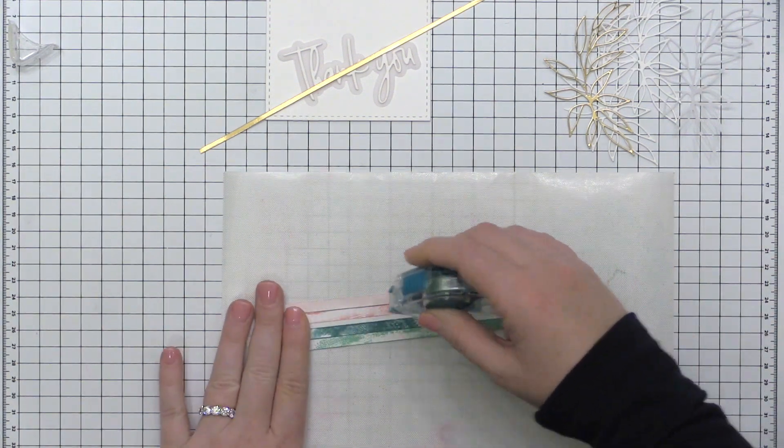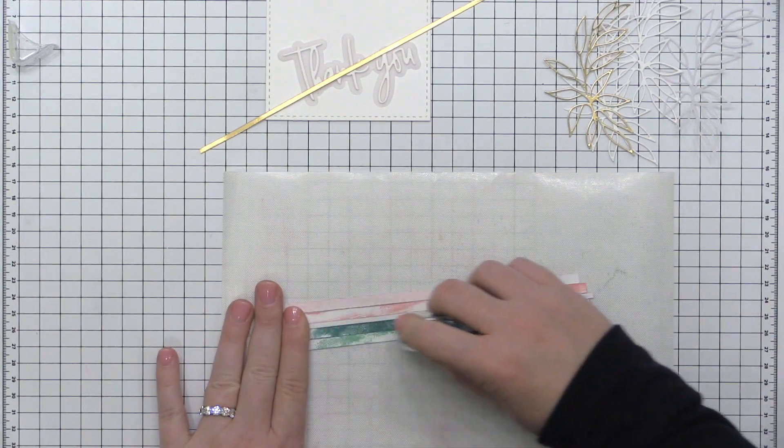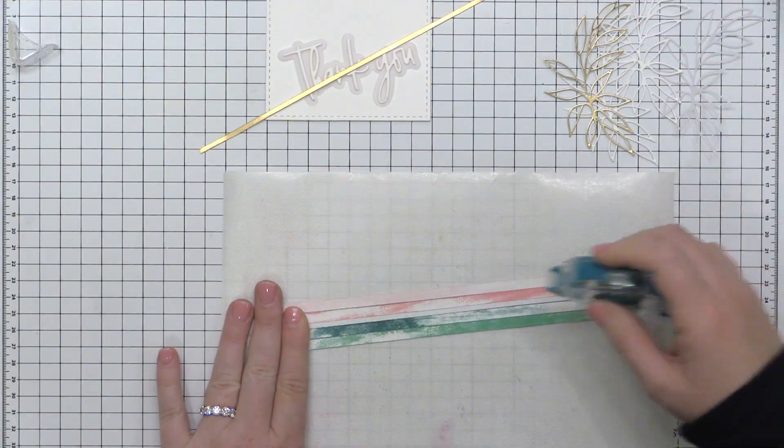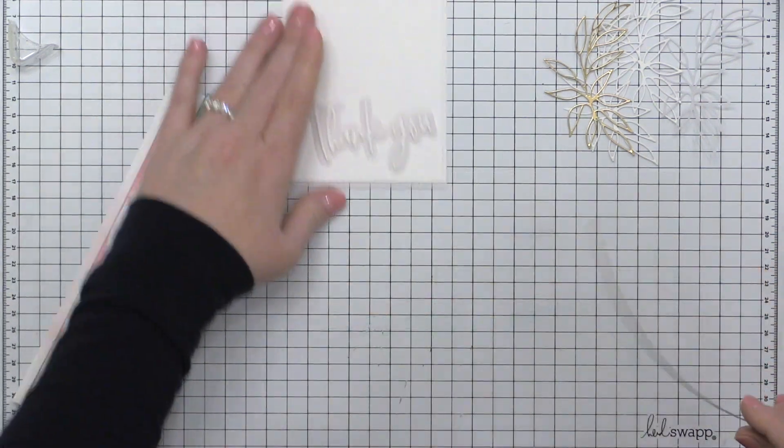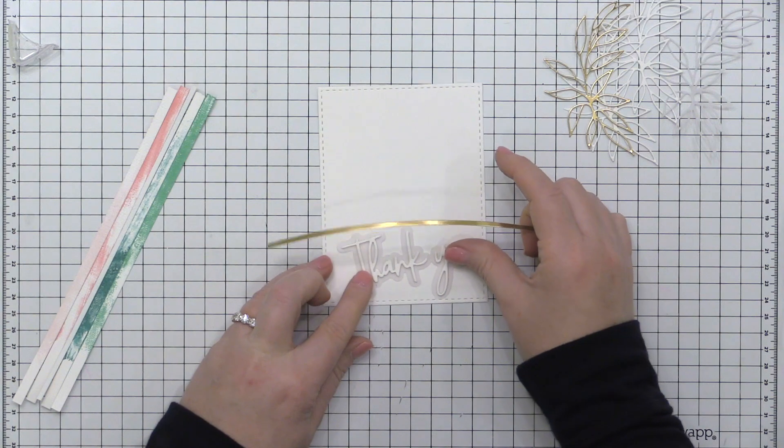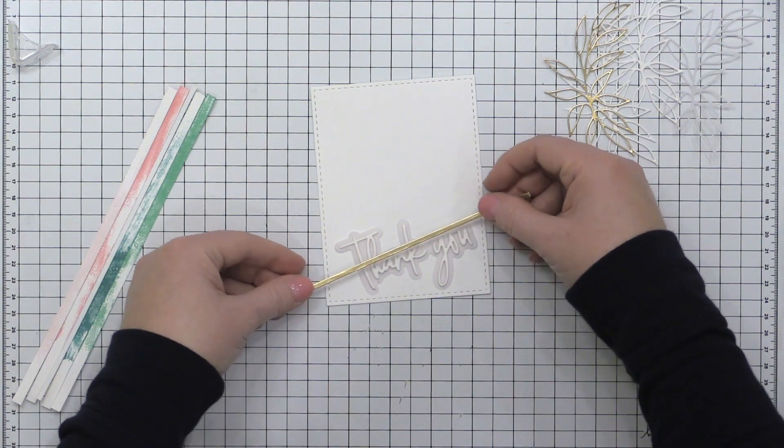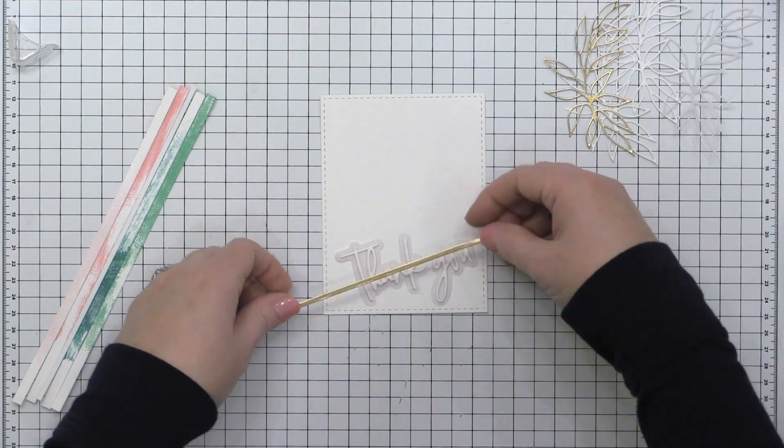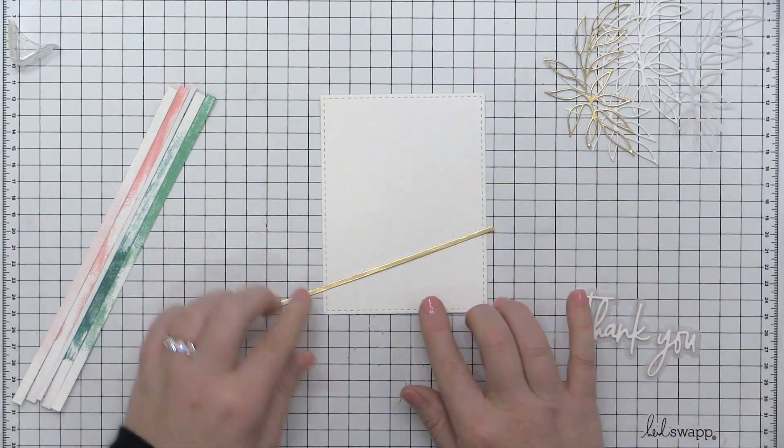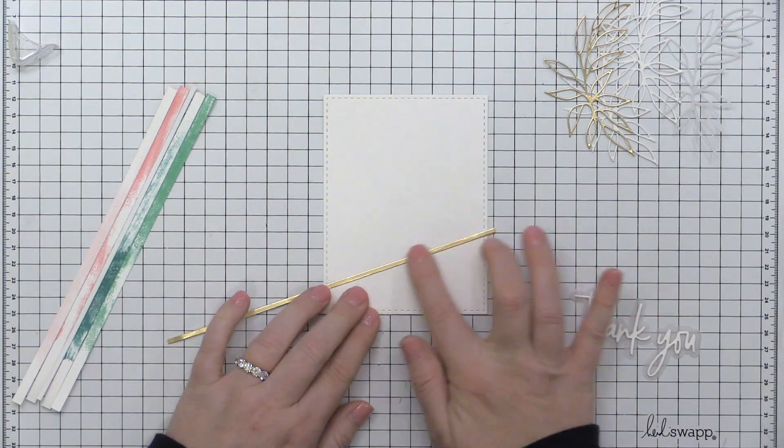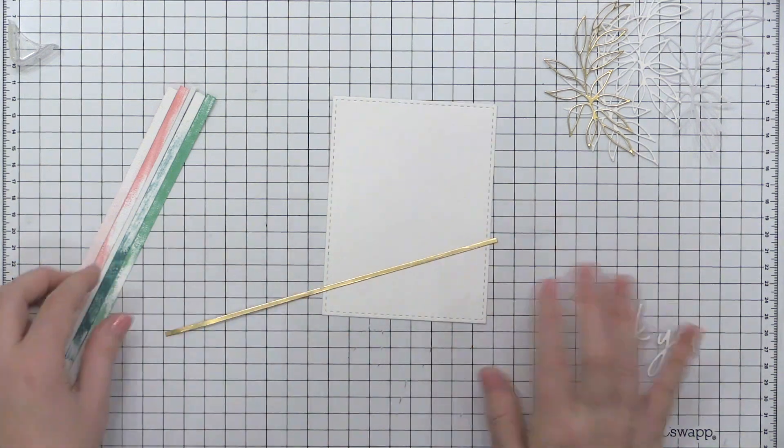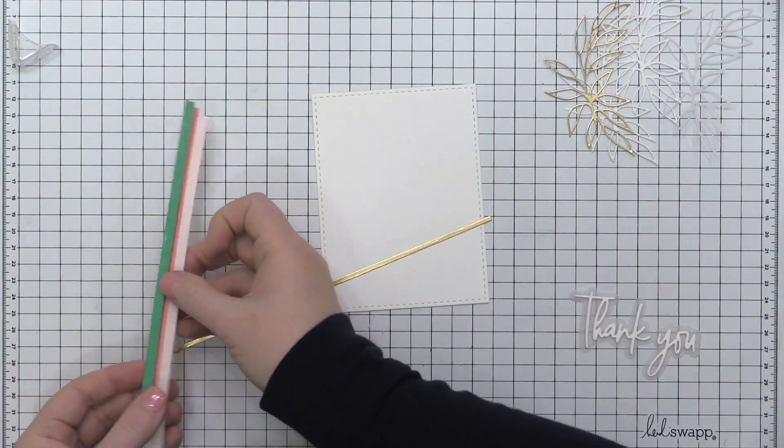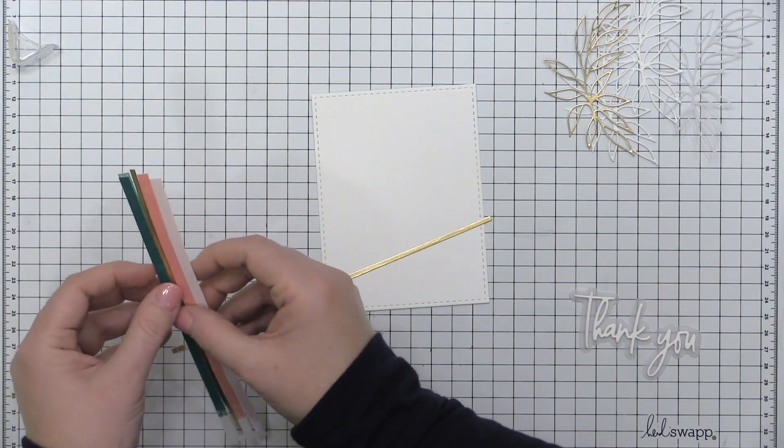Now I have all of these stripes face down on my work surface and once again I brought in that easy clean mat and I'm adding tape runner adhesive to the back side of all of these stripes at once and then I'm going to start layering them onto my card front. Now this card front is made from Neenah solar white heavyweight cardstock and I die cut it using the essential stitched rectangle die from Pinkfresh Studio. It's the larger of the pair that comes in that set.